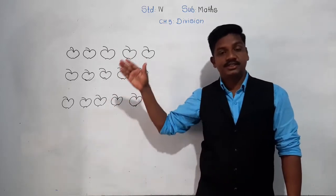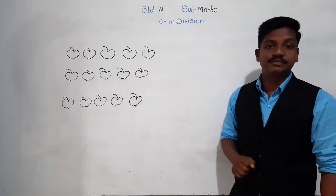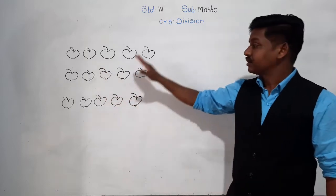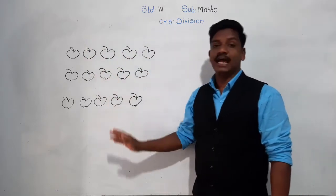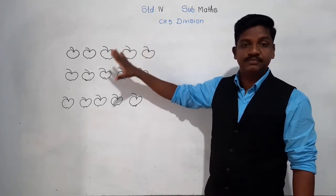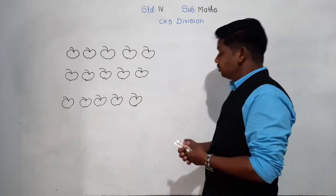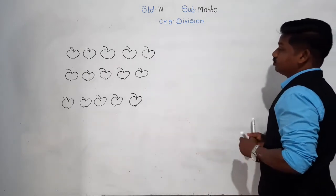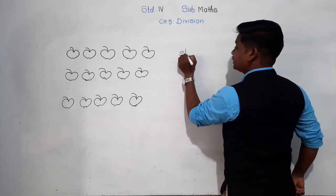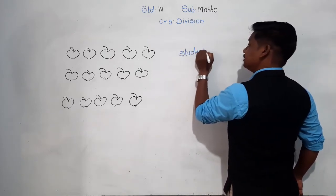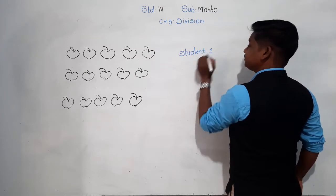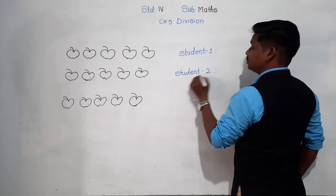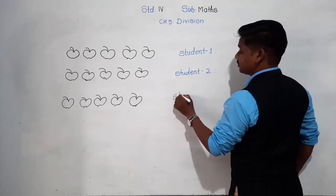Before that, just for revision, we will revise the concept again. See here on the blackboard — I have a total of 15 apples drawn here. We have to divide or distribute these 15 apples equally among three students: Student One, Student Two, Student Three.